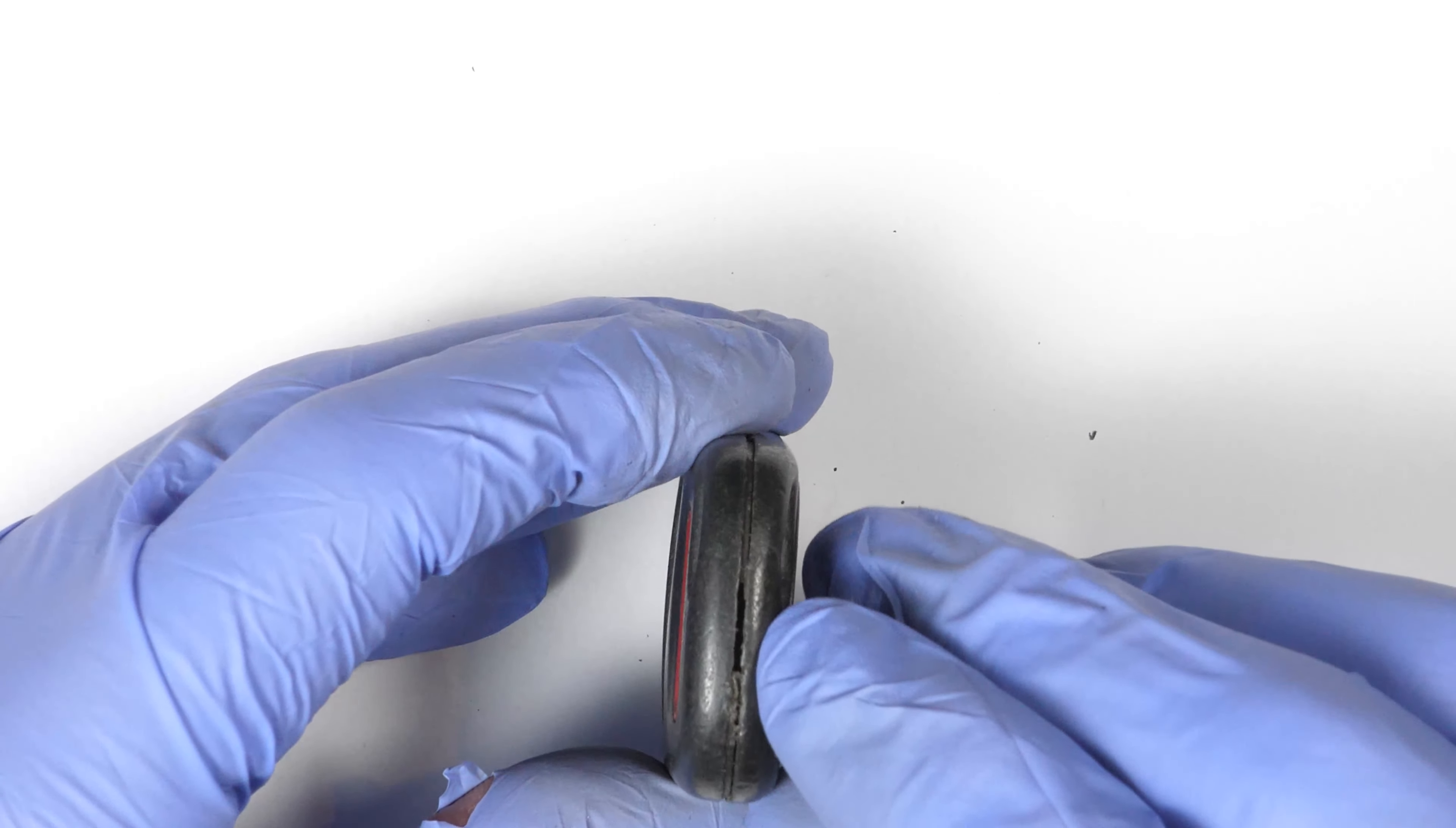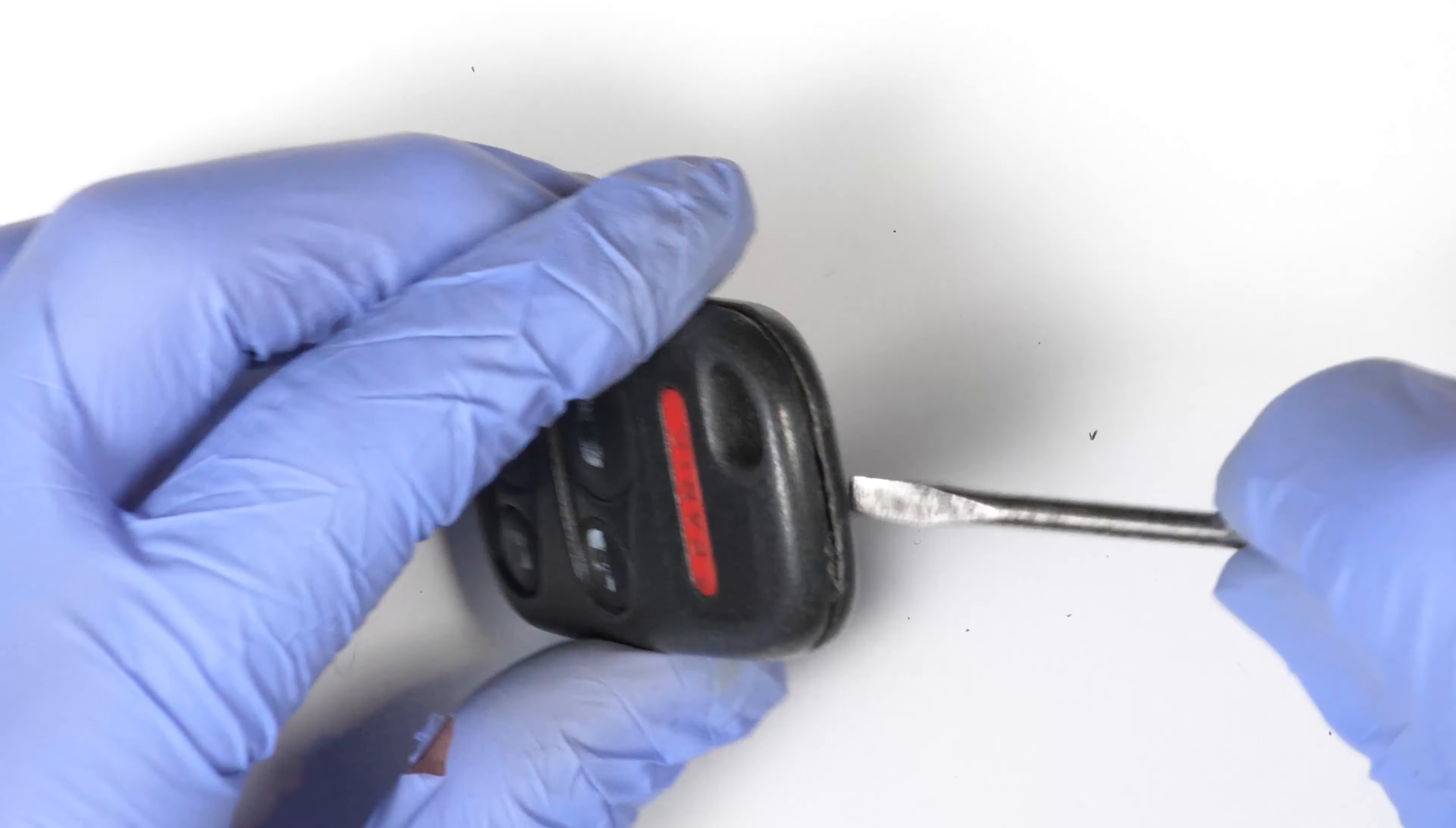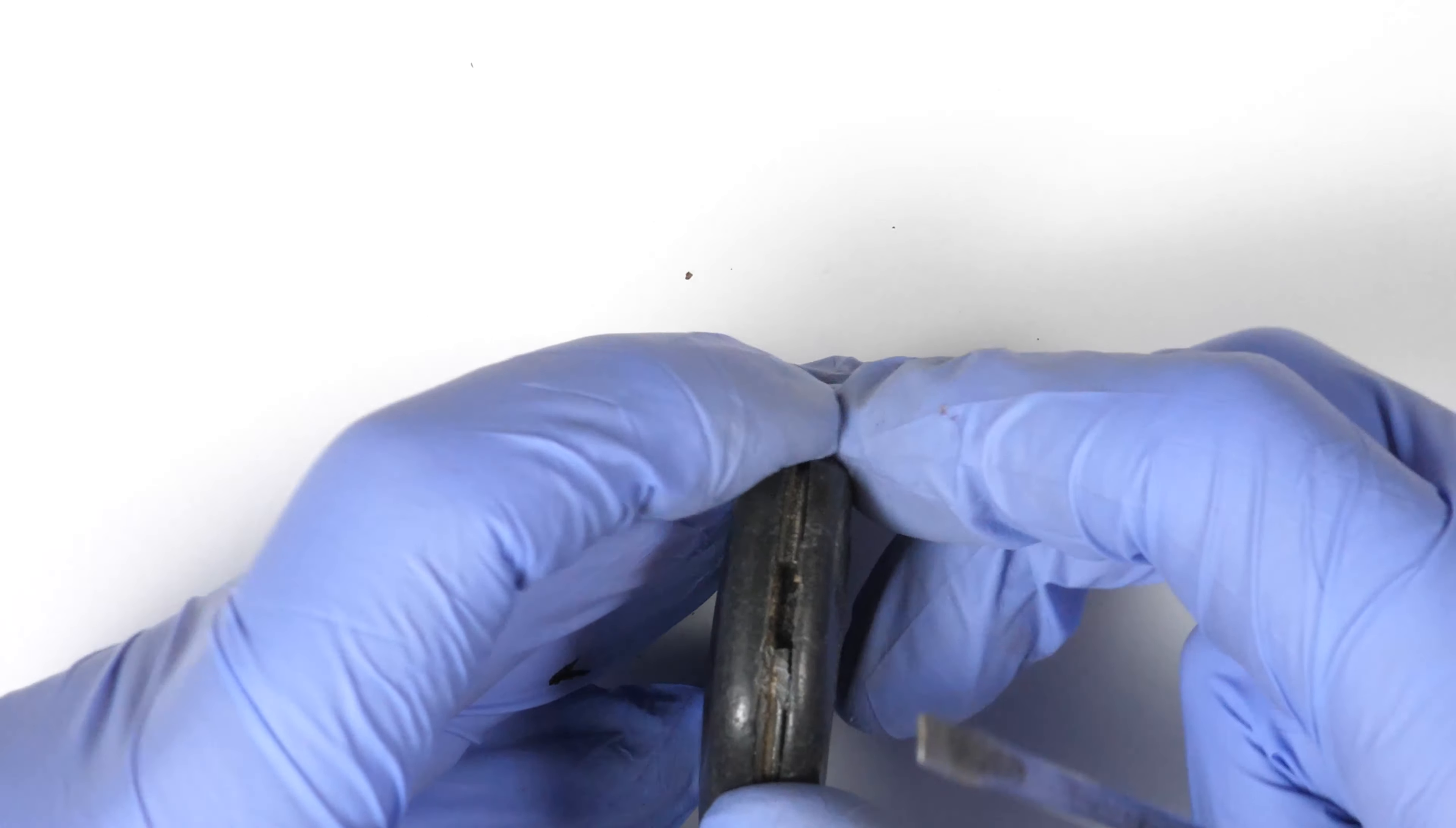If you place the key right here, there's a small slot. You can take a flathead screwdriver, put it inside, and then twist and it will open the case in two parts.